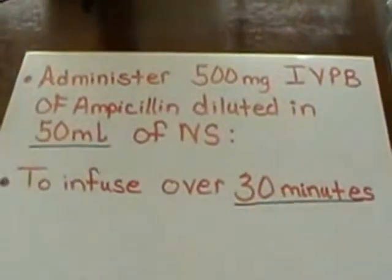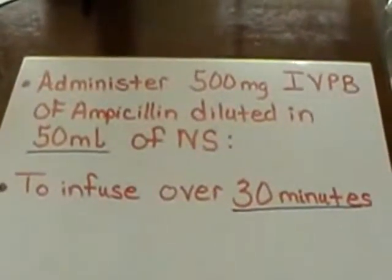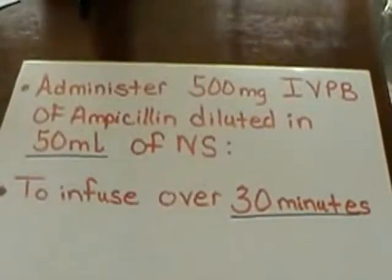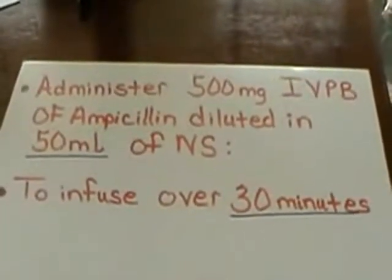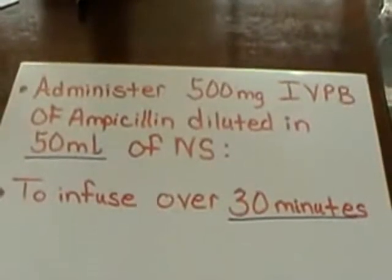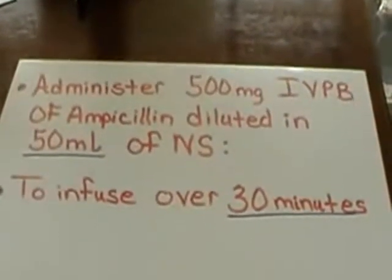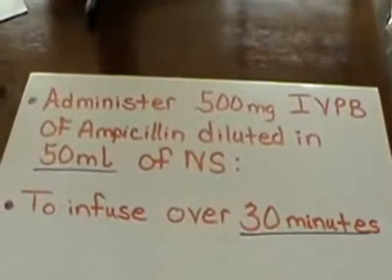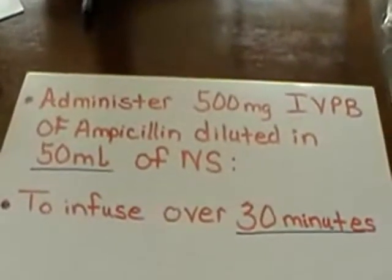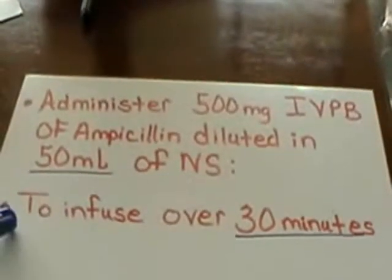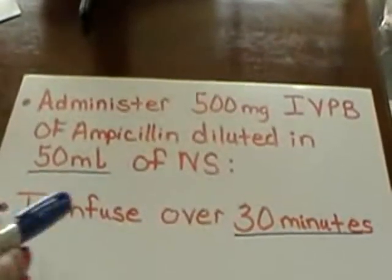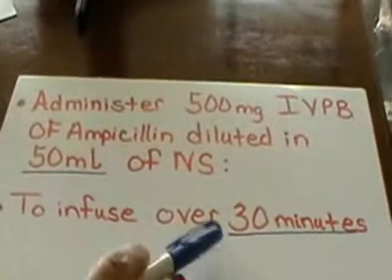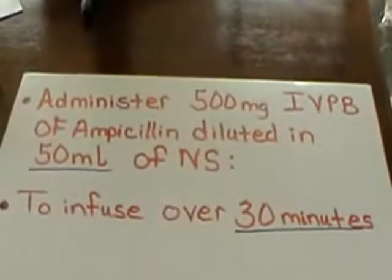Now, we are going to work a different type of IV rate calculation. We are now administering an antibiotic. We have an order that reads, administer 500 milligrams of ampicillin IV piggyback in 50 milliliters of normal saline. We are to infuse this antibiotic over 30 minutes.